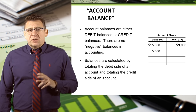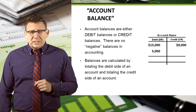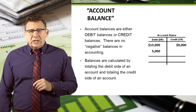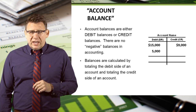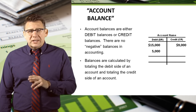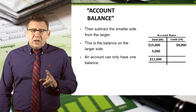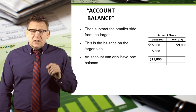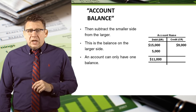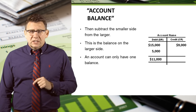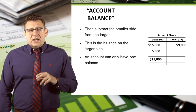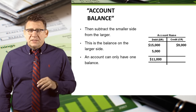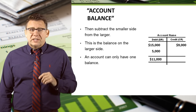Account balances are either debit balances or credit balances. There are no negative balances in accounting. Balances are calculated by totaling the debit side of an account and totaling the credit side, then subtracting the smaller side from the larger — this is the balance on the larger side. An account can only have one balance. In this example, debits are $20,000 and credits are $9,000, so the balance in this account is an $11,000 debit balance.